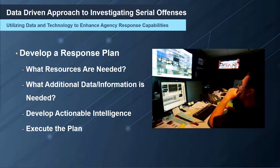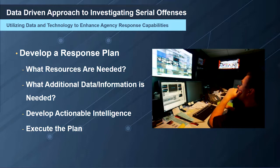The first step is to develop a response plan: what resources are needed, do we have adequate manpower, what technology can we bring to bear, and are there outside agencies that can help? If the crimes cross jurisdictional boundaries, more than one agency will be involved. We also need additional data and information to develop an effective response plan, and once we have it, we turn it into something actionable.